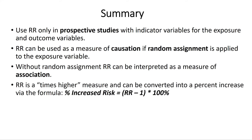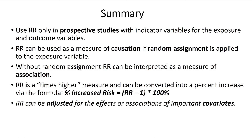Relative risk is a times-higher measure and can be converted into a percent increase via the formula: percent increased risk equals relative risk minus 1, quantity times 100%. Relative risk can also be adjusted for the effects or associations of important covariates.